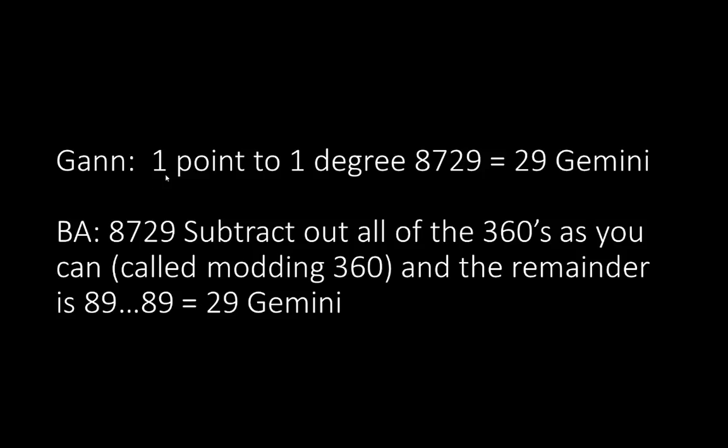Gann. First line up there was one point to one degree. 8,729 equals 29 Gemini. How do we get that? B.A. 8,729. Subtract out all of the 360s as you can. This is called modding 360. And the remainder is 89, which equals 29 Gemini. Now, so what you do is you type into a calculator, 8,729. You just keep subtracting all the whole 360s as you can until you get down. And you'll be left with a remainder that you can't go any further unless you go below zero of 89. And that 89 is transferred out. It's equivalent to two signs plus 29 degrees, which of course is Gemini, for those of you that know that conversion.